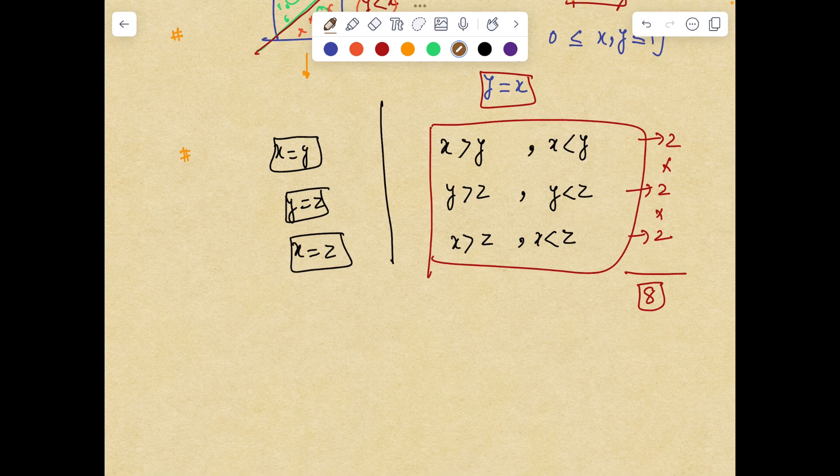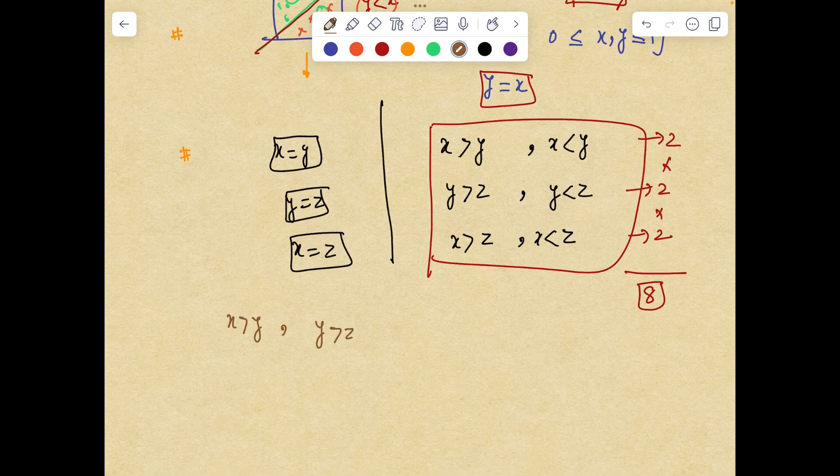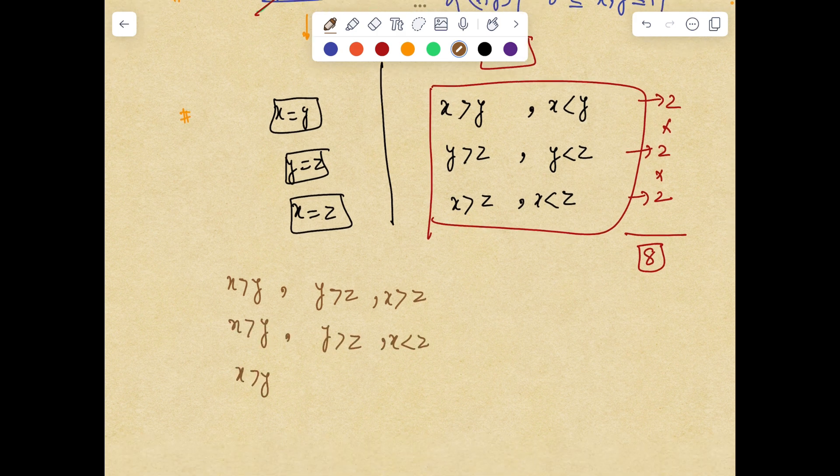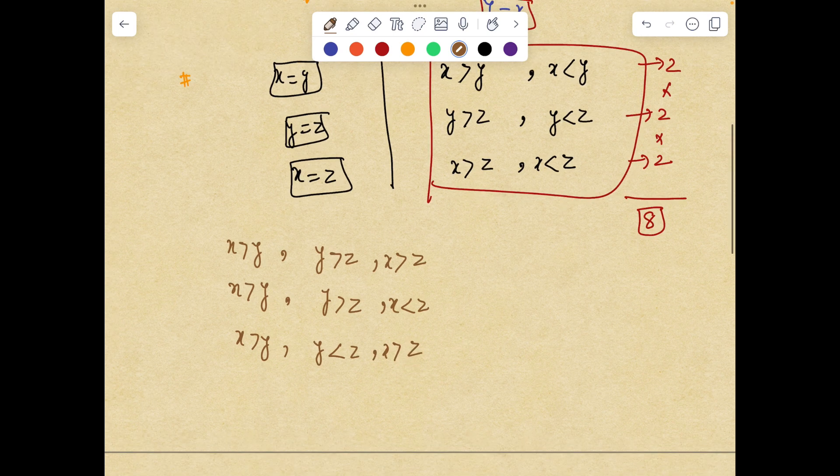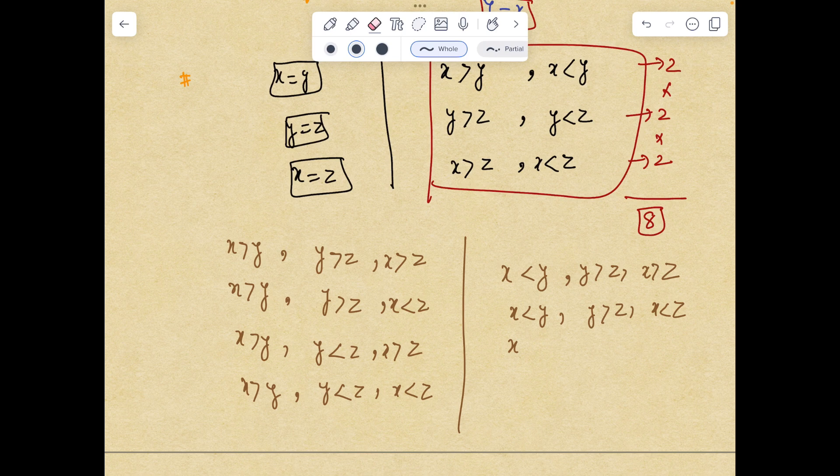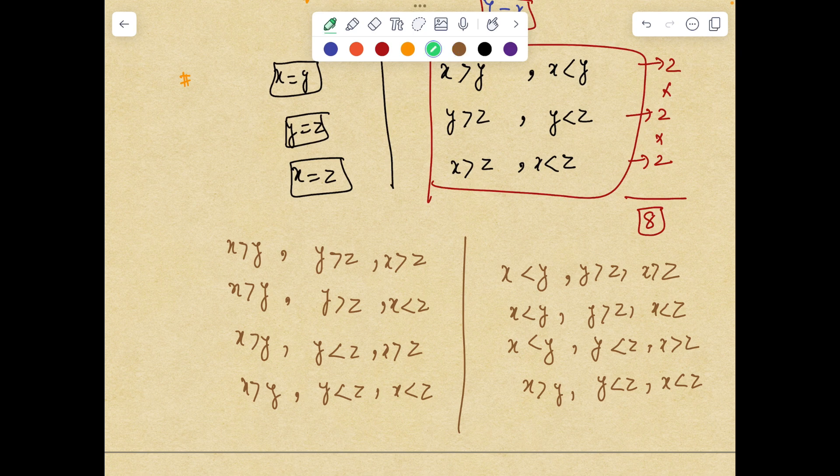So let us take the cases. Let us make all eight cases: x > y, y > z, x > z; x > y, y > z, x < z; x > y, y < z, x > z; x > y, y < z, x < z; x < y, y > z, x > z; x < y, y > z, x < z; x < y, y < z, x > z; x < y, y < z, x < z. So these are eight regions in which the entire cube will be divided into.